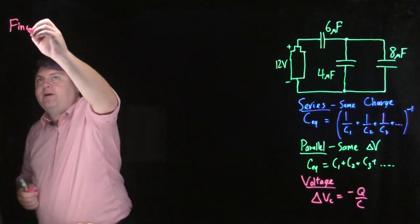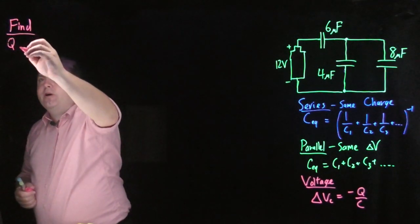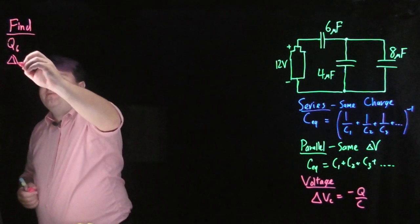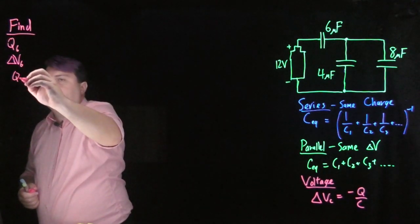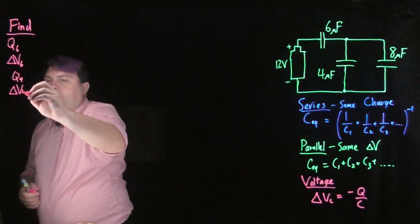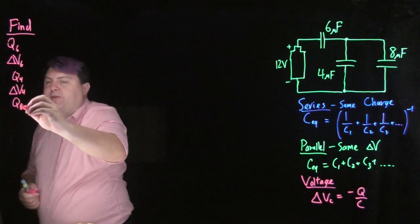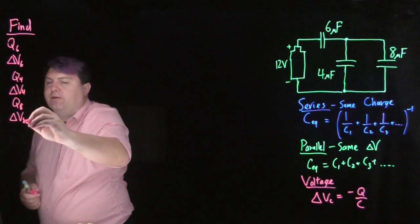We're going to find the charge over the 6 microfarad, the delta V over the 6 microfarad, the charge over the 4, the delta V over the 4, the charge over the 8, and the delta V over the 8.